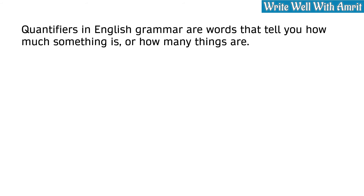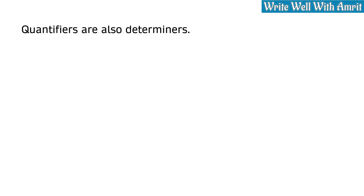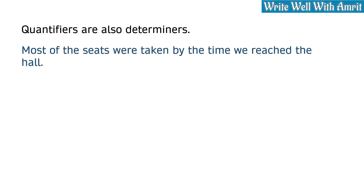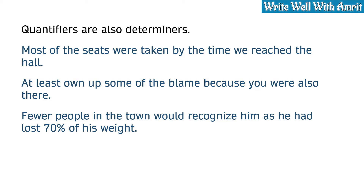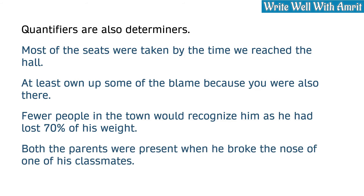Quantifiers in English grammar are words that tell you how much something is or how many things are. Quantifiers are also determiners. For example: 'Most of the seats were taken by the time we reached the hall.' 'Own up some of the blame because you were also there.' 'Fewer people in the town would recognize him as he had lost 70% of his weight.' 'Both the parents were present when he broke the nose of one of his classmates.' All the highlighted words in these sentences are determiners.